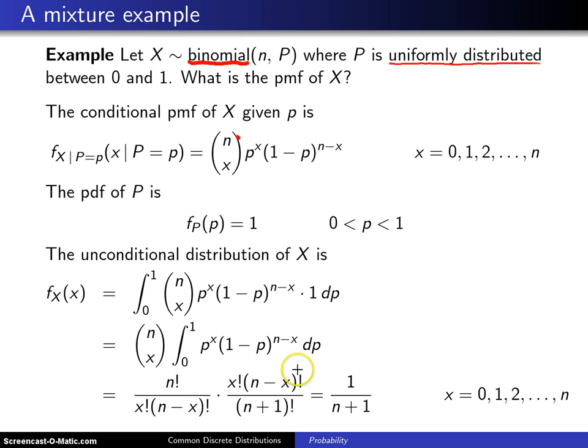And this integral right here, once you assume that p lies between 0 and 1, you can send that to Maple, or you can do some substitutions and wind up with x factorial n minus x factorial divided by n plus 1 factorial.